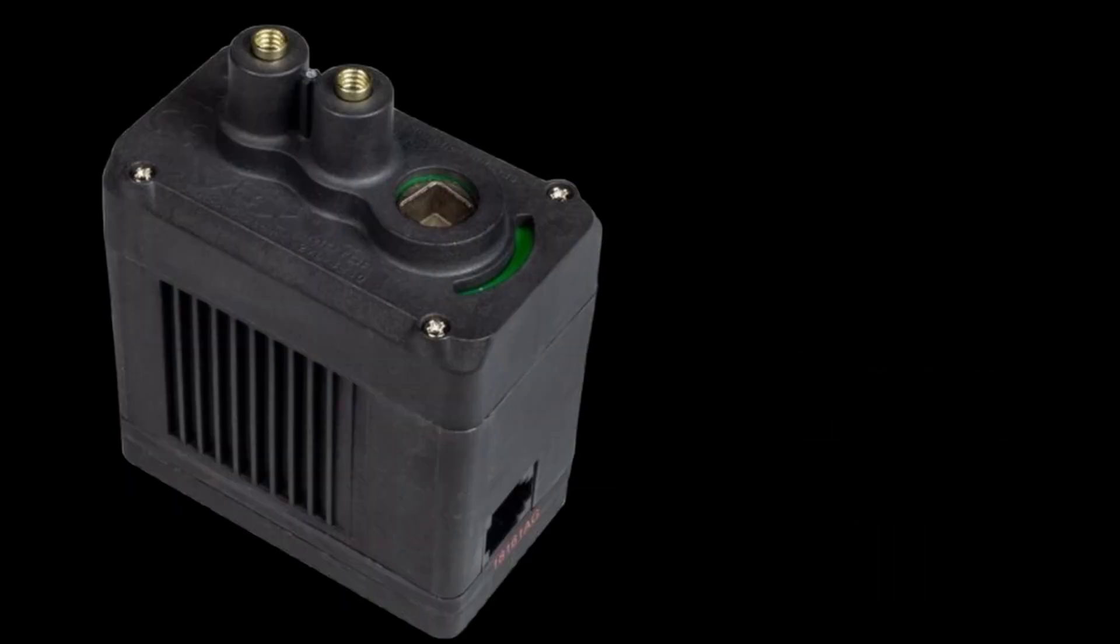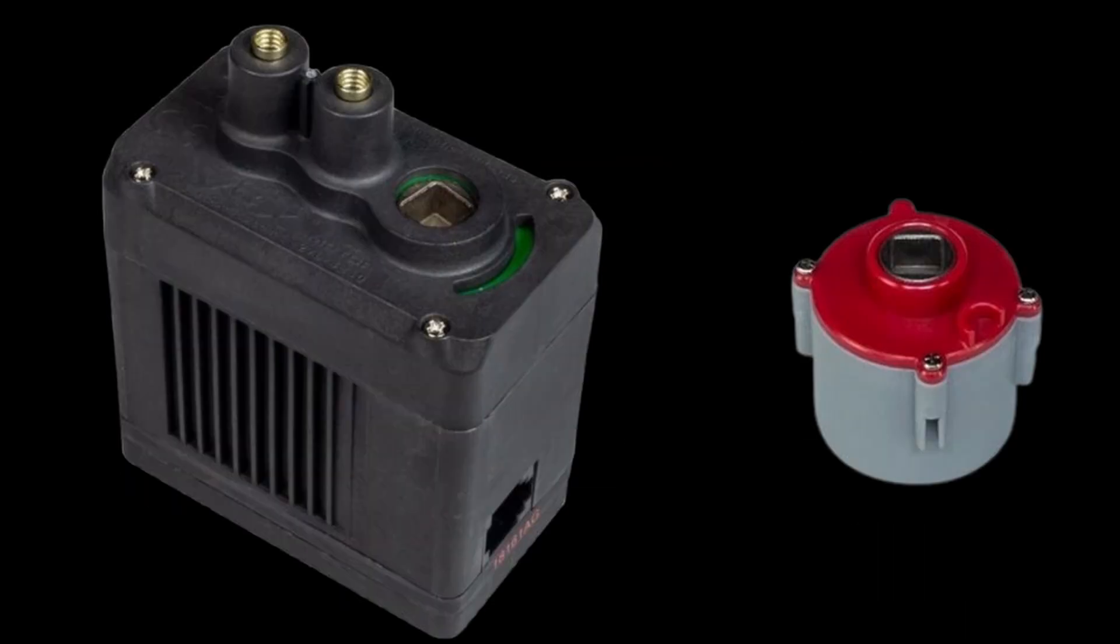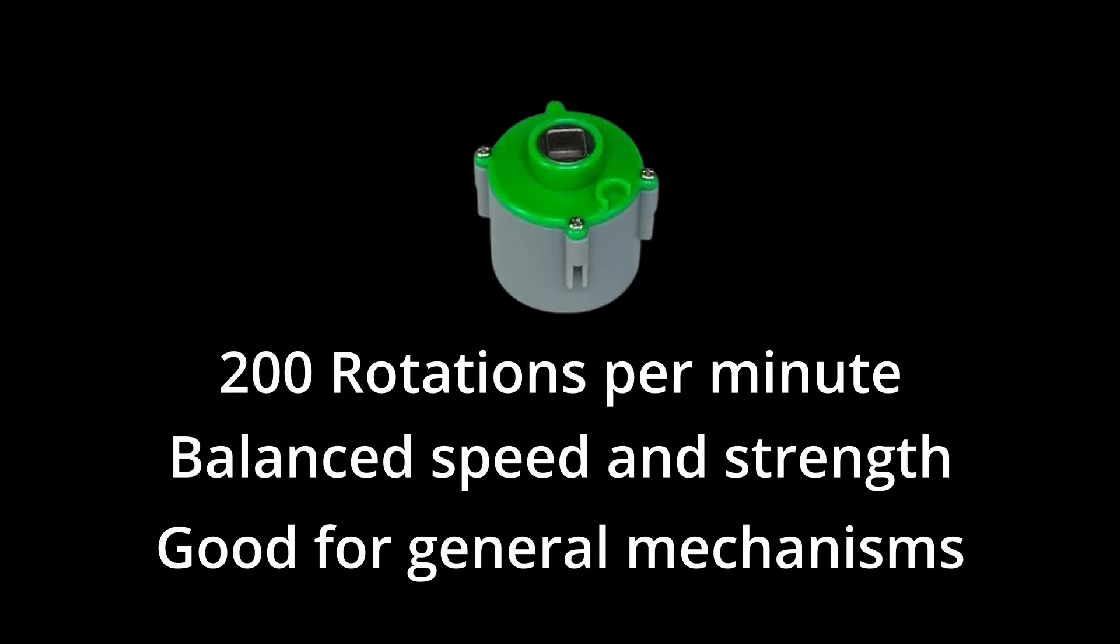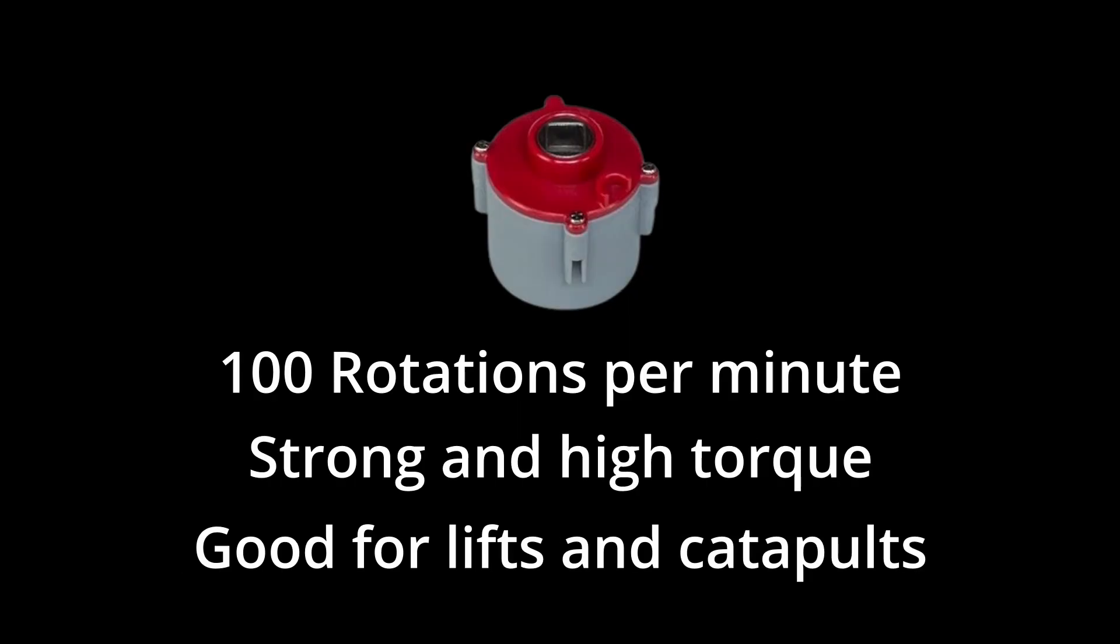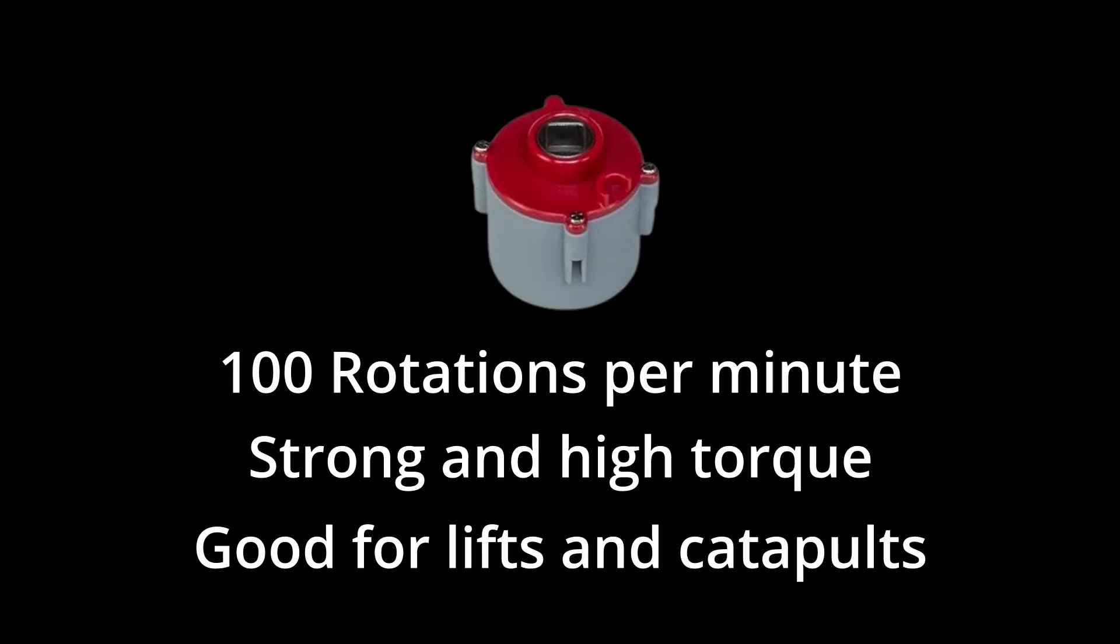The 11 watt motors also have cartridges that can be swapped out. The default green cartridge is a good balance of speed and strength. Red is stronger, but much slower, making it a good choice for a lift. Blue is faster, but very weak, making it ideal for a flywheel or intake.